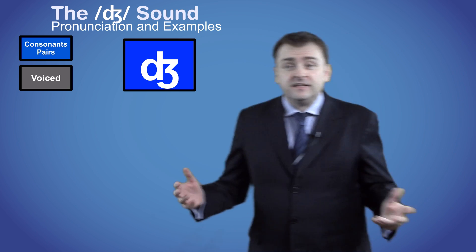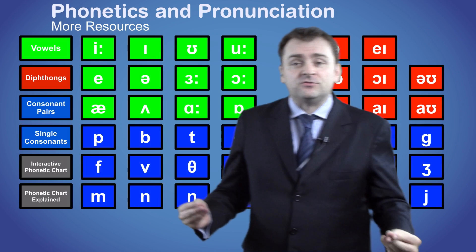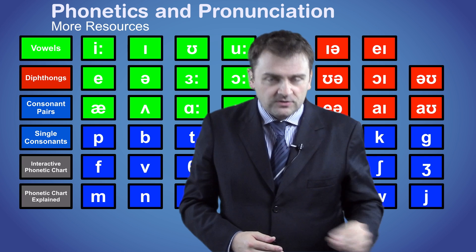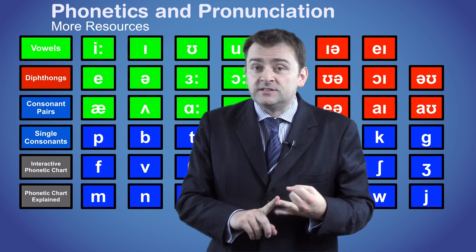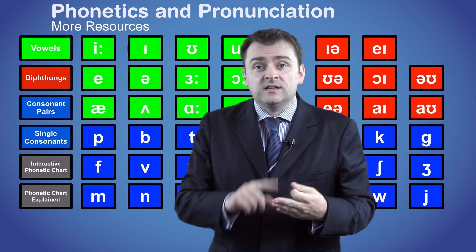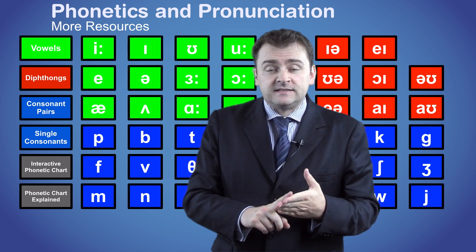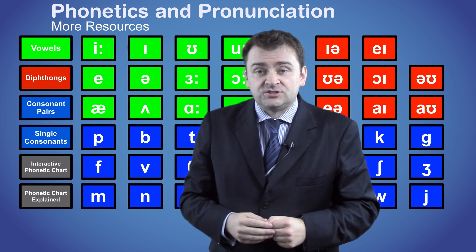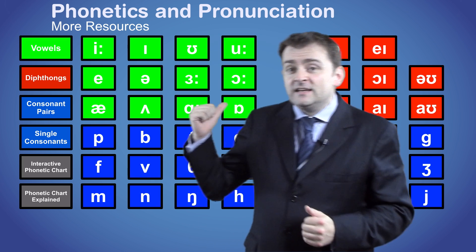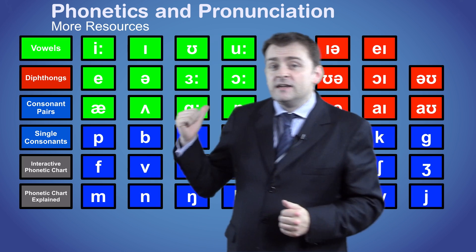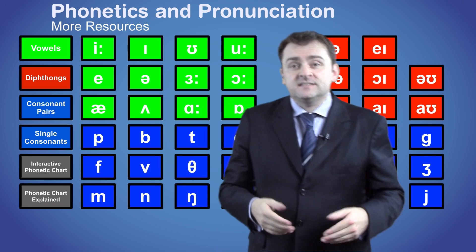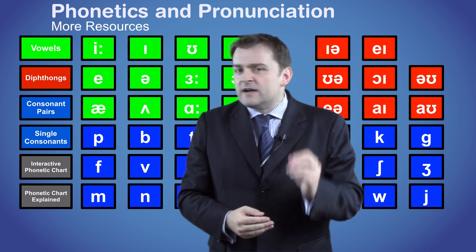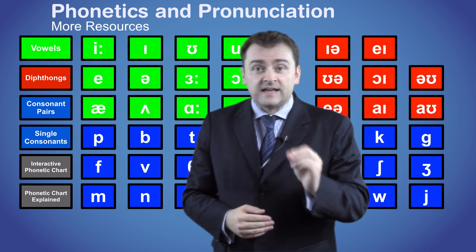So that is it for the J sound. But we have made additional videos on each of the groups of sounds: vowels, diphthongs, single consonants, and consonant pairs, as well as a video explaining the phonetic chart. You can also click on any of the symbols behind me to see a similar video with lots of examples and an explanation on how to pronounce that sound.